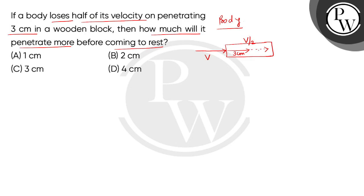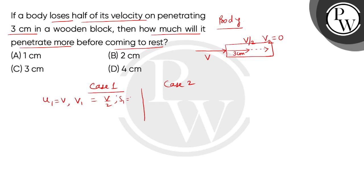We have to find how much more distance is covered after this until the final speed is 0. So we consider this final speed as V2. We consider two cases here — Case 1 and Case 2. In Case 1, the initial speed U1 is V, the final speed is V/2, and the distance covered is 3 cm. In Case 2, the initial speed is V/2, the final speed is 0, and we have to find distance S2.